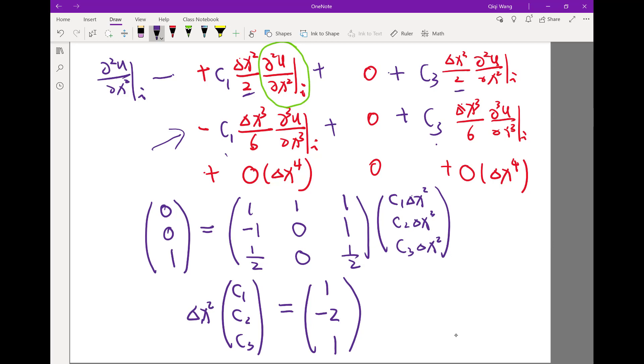So essentially if I do the error analysis, I divide everything by delta x square to get the error. My error just lies in this, so I get a second order scheme that is O delta x squared, because I have O delta x fourth and divide everything by delta x square, I get O delta x square.